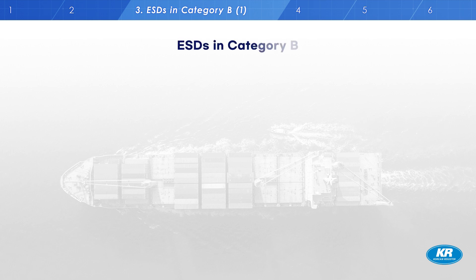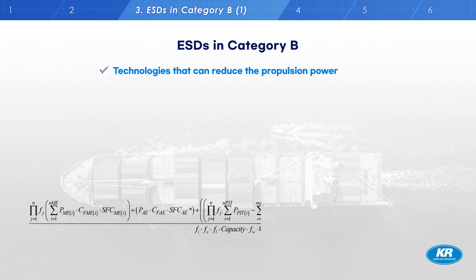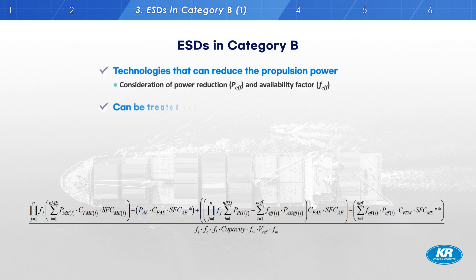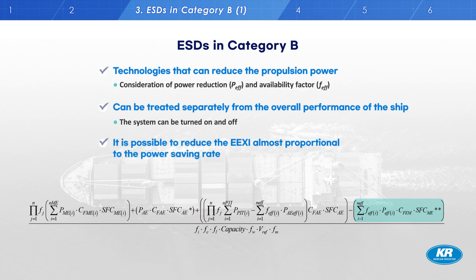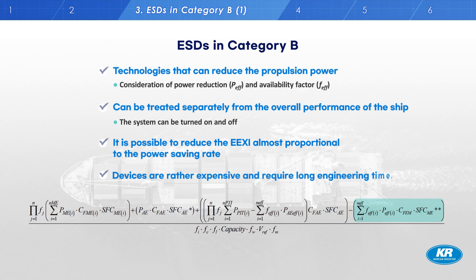Now, ESD Category B. ESDs in Category B are technologies that can reduce propulsion power and can be treated separately from the overall performance of the ship, meaning these devices can be turned on and off. Unlike Category A, Category B ESDs can reduce the EEXI rating almost proportionally to the power saving rate, because the power reduction terms are directly reflected in the numerator of the EEXI formula. However, the drawback is that these devices are rather expensive and require a long engineering time.